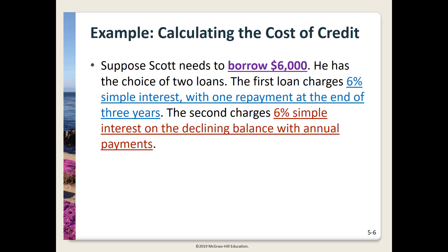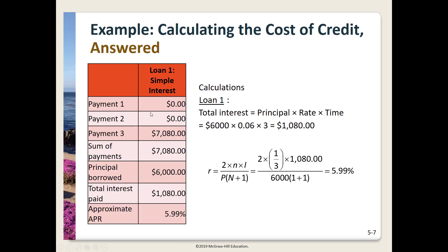Suppose Scott needs to borrow $6,000 and has the choice of two loans. The first loan charges six percent simple interest with one repayment at the end of three years. For this loan there is only a single payment of $7,080 at the end of year three. The principal borrowed was $6,000, making the total interest paid $1,080. For the total interest calculation: $6,000 × 0.06 × 3 = $1,080.